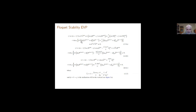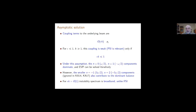The first conclusion is that the coupling terms to the underlying beam are order epsilon K. In the PSI limit — where epsilon is small and K is large — this coupling is weak, and therefore PSI is relevant, with only two frequencies dominating (plus or minus omega/2), only if epsilon K is much less than 1. Under this assumption, the n=0 (omega/2) and n=1 (-omega/2) components dominate in this system, and the eigenvalue problem can be solved iteratively.